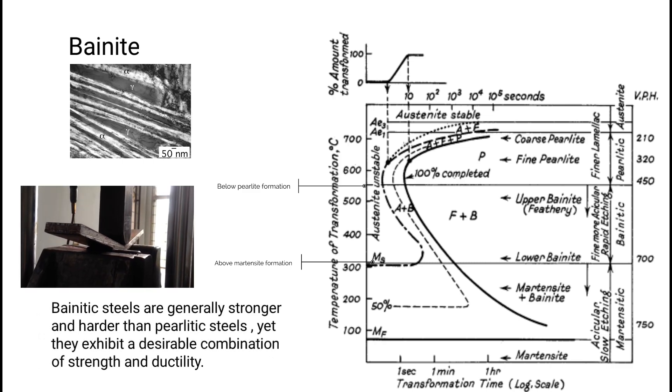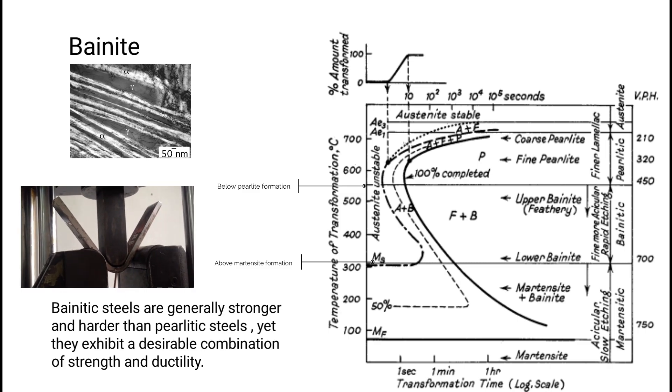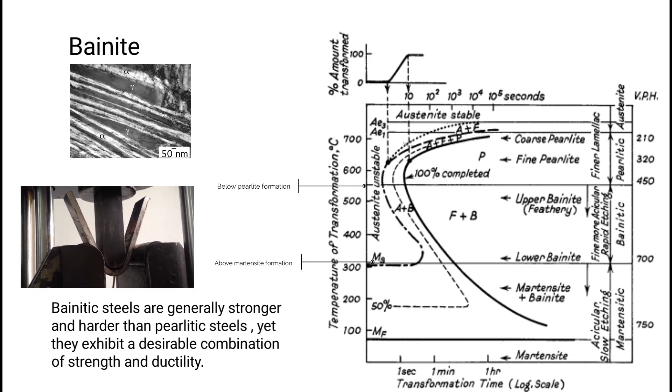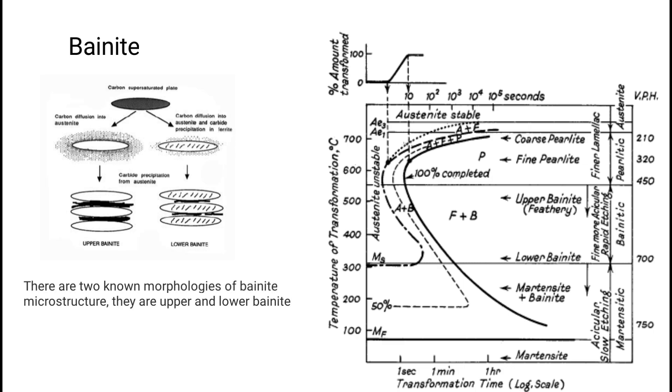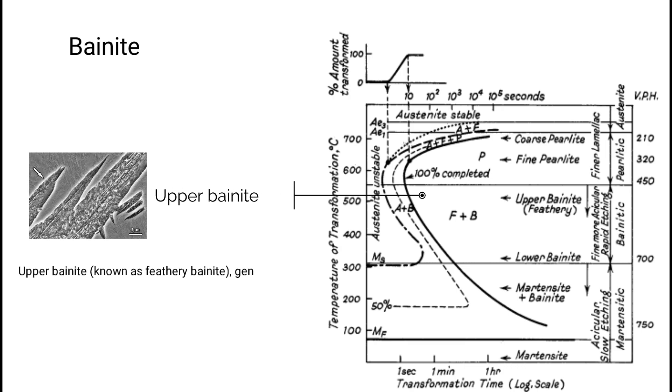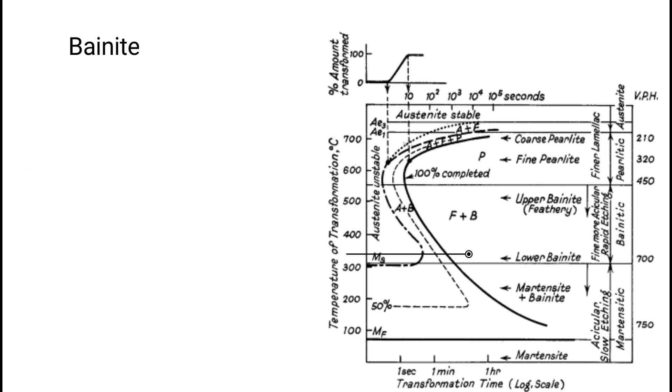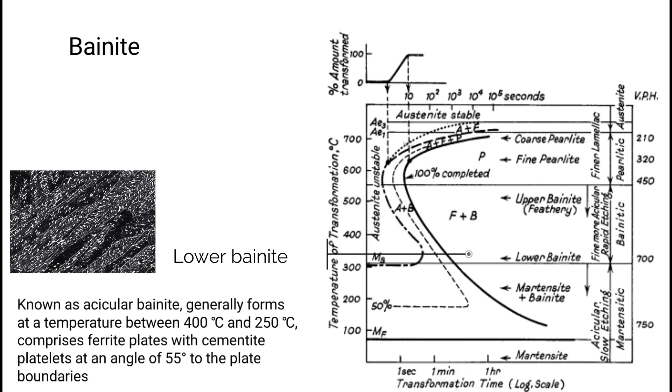Bainitic steels are generally stronger and harder than perlitic steels, yet they exhibit a desirable combination of strength and ductility. There are two known morphologies of bainite microstructure: upper and lower bainite. Upper bainite, known as feathery bainite, generally forms at a temperature between 550 degrees Celsius and 400 degrees Celsius, consists of ferrite lath with cementite along the lath boundaries.